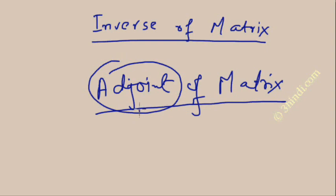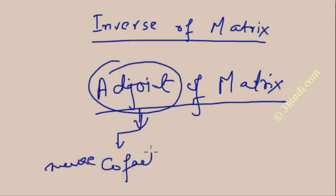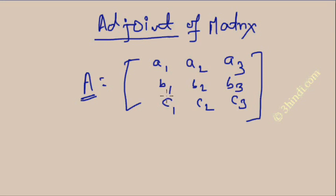The adjoint of a matrix is a two-step procedure. First, make the cofactor matrix, and the second step is to transpose it. Suppose A is a square matrix where the elements are A1, A2, A3, B1, B2, B3, and C1, C2, C3. It can be 2×2, 3×3, 4×4, or something like that.